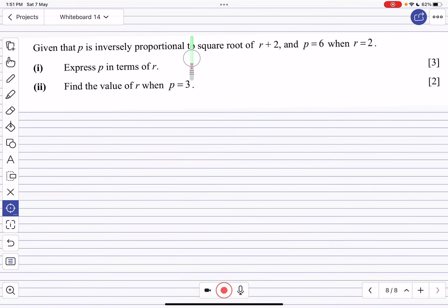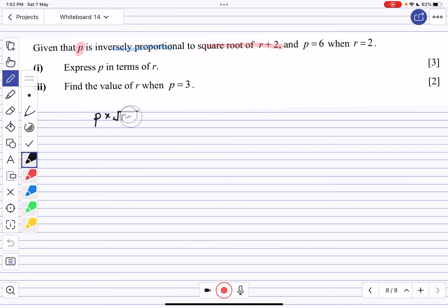We know that p is inversely proportional to the square root of r+2, and p equals 6 when r equals 2. How can we do this question? First, find k. Since we have two variables that are inversely proportional, we can form the equation: p multiplied by the square root of r+2.